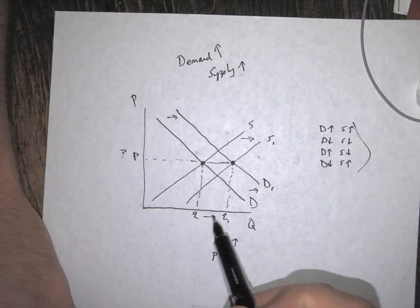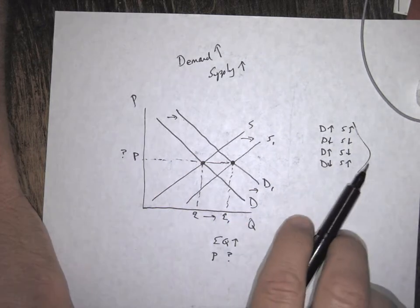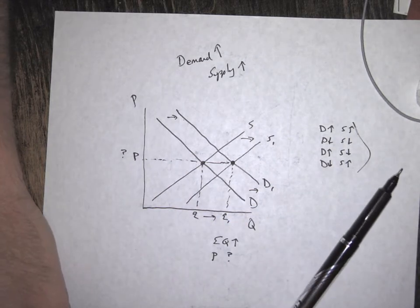story, that's what that means. I can see the quantity went up, I see the price went nowhere. Okay, so that's a simultaneous shift of demand and supply.